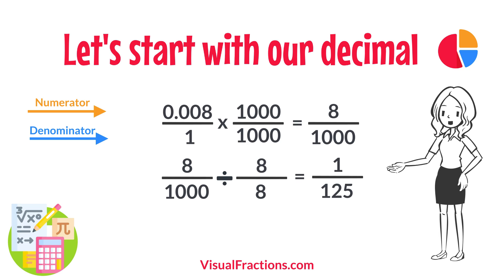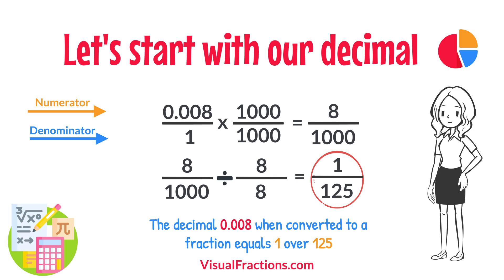So, 8 1,000ths simplifies neatly to 1 125th. And there you have it. The decimal 0.008 when converted to a fraction equals 1 125th.